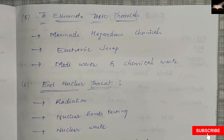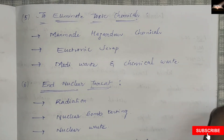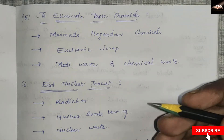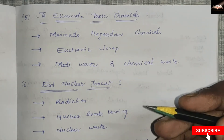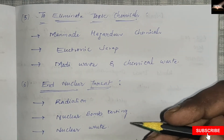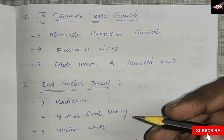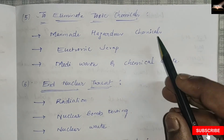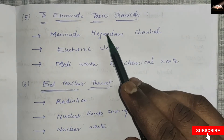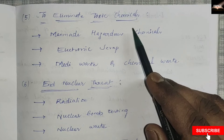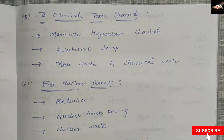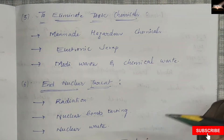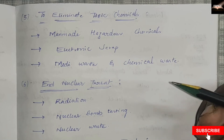Greenpeace works to eliminate toxic chemicals. Toxic chemicals in our environment threaten our rivers, lakes, air, land and oceans, and ultimately ourselves. In this aspect, they cover man-made hazardous chemicals, electronic scrap, medical waste, and chemical waste.